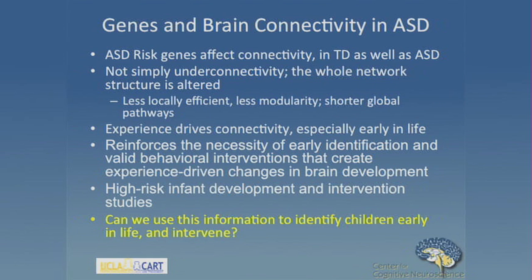To summarize: ASD risk genes that we've studied all affect connectivity, and they affect connectivity in typically developing as well as ASD children. It's not simply a matter of under-connectivity — the whole network structure and dynamics of how the network is functioning is altered. I also like to point out that experience drives connectivity especially early in life, which reinforces the necessity of very early identification and valid behavioral interventions that create experience-driven changes that can truly affect brain development and brain connectivity.